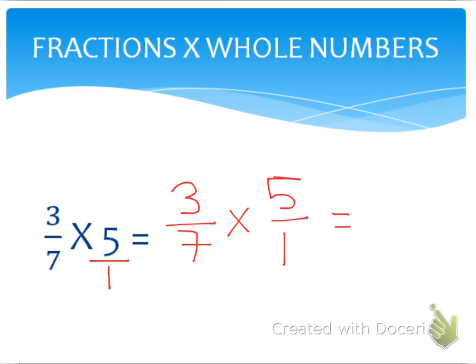Now I'm going to do the same thing I did in the previous example. I'm going to multiply my numerators together. So I'm going to be multiplying my three times my five, and that's going to give me fifteen. So fifteen becomes the numerator of my product.